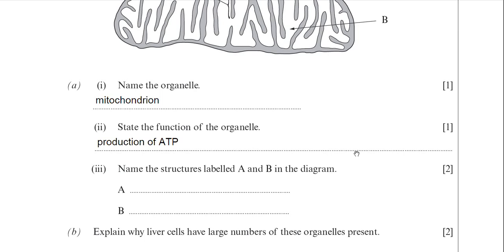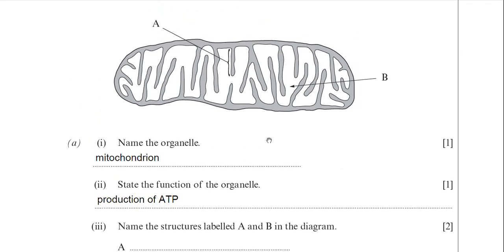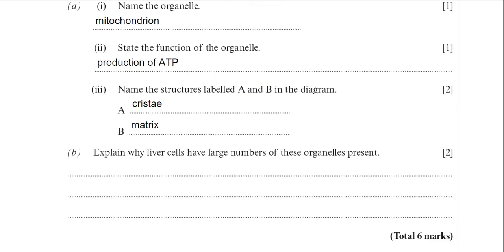Part 3: name the structures labelled A and B in the diagram. If I scroll up, you can see the diagram shows the classic highly folded inner membrane of the mitochondrion. That inner membrane is the cristae. The arrow pointing to the fluid part of the mitochondrion — that would be called the matrix. So I've put in cristae and matrix there.